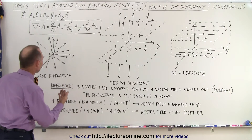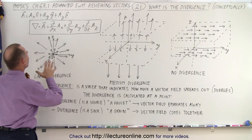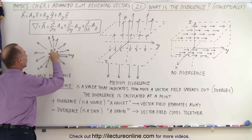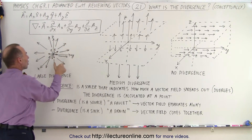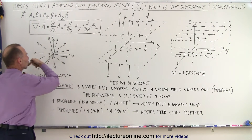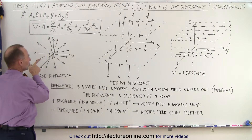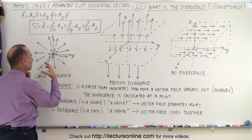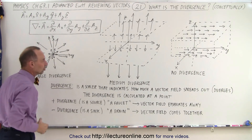In the third field, we have the vector field changing in all directions, starting from the origin and going outward. Notice that the vectors get longer no matter which direction I travel — the x direction, the y direction, the z direction. It seems to be increasing in all directions.